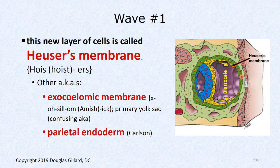This new membrane is called Heuser's membrane. Watch out on boards — it has several aliases: the exocoelomic membrane, and parietal endoderm in Carlson's book. I'm going to go with Heuser's membrane as that's what the board books use. It arises from the hypoblast layer — new cells are created by mitosis, spit out, and migrate down each side until we have another complete layer.